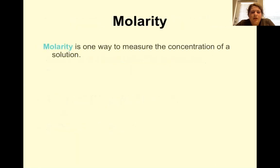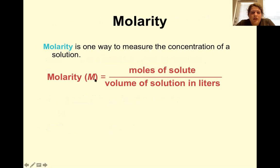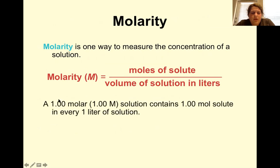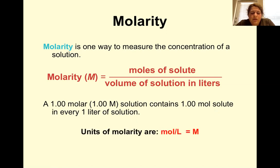Molarity is just one way to measure the concentration of a solution. The equation is: molarity (capital M) equals moles over volume in liters. A 1.00 M solution contains one mole of solute for every one liter of solution, and that proportion stays the same — whatever you pour out will have the same concentration as long as it was well mixed. The units of molarity are moles per liter, or capital M — they mean the same thing.